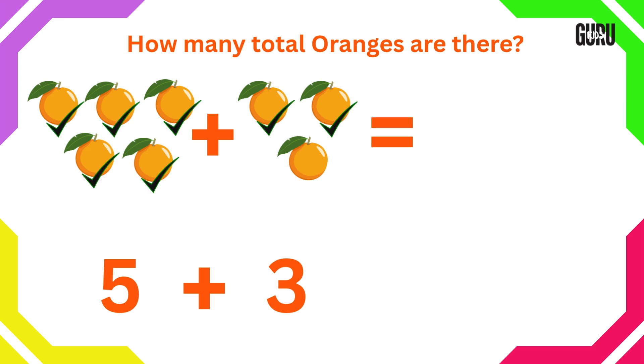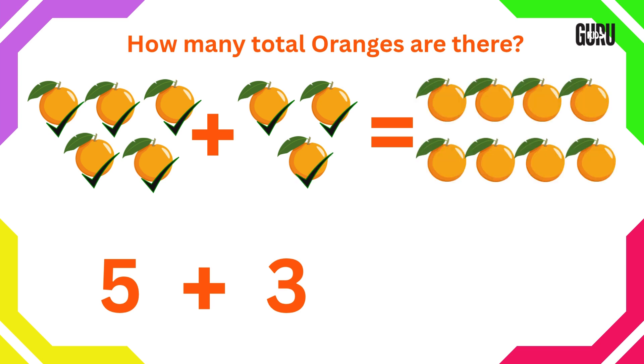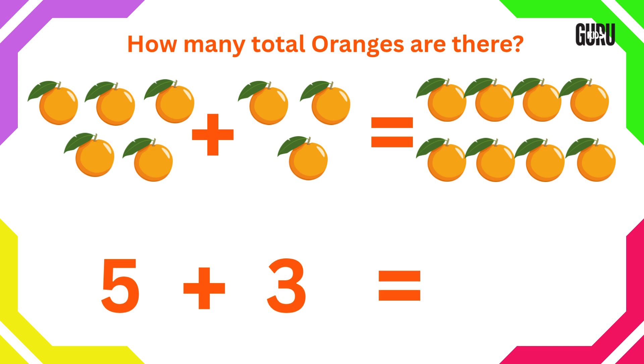6, 7, 8. So total 8 oranges. Therefore, 5 add 3 is 8.